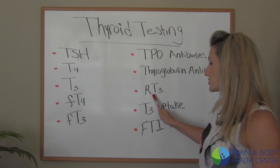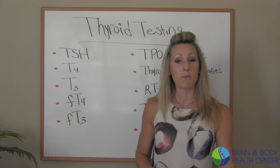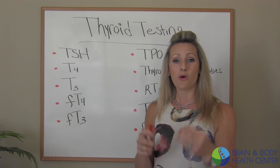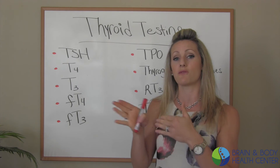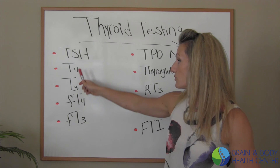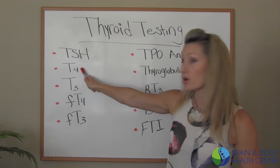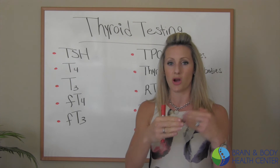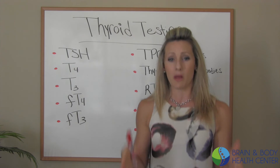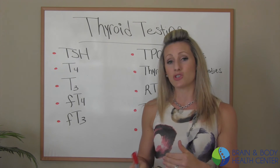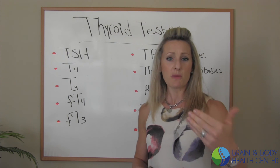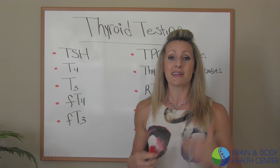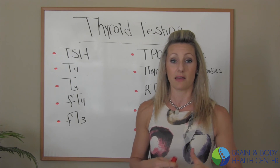We also want to be looking at reverse T3. That's going to tell us how much is actually getting converted — the ratio of T4 that's getting converted to T3 in the liver versus reverse T3. In normal amounts, 20% should be going to reverse T3. But if 50% is actually going to reverse T3, that's not usable and it's going to create dysfunction in your body.